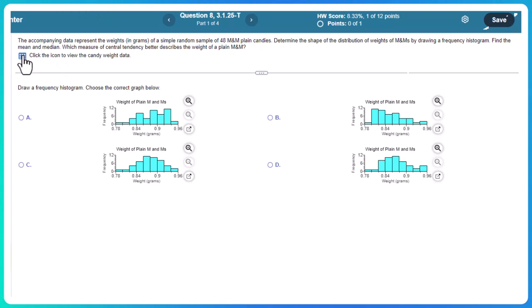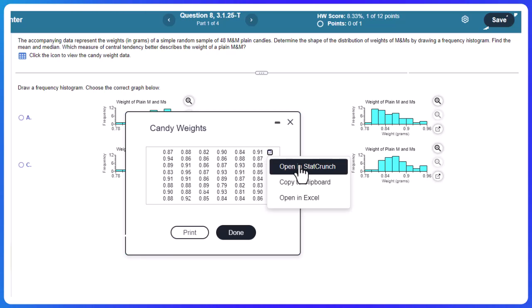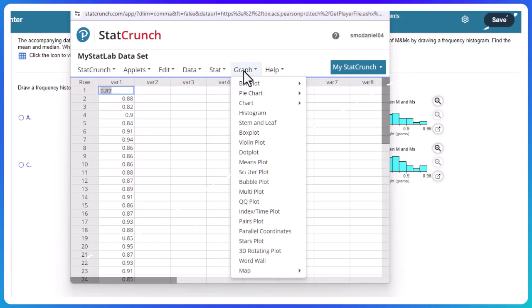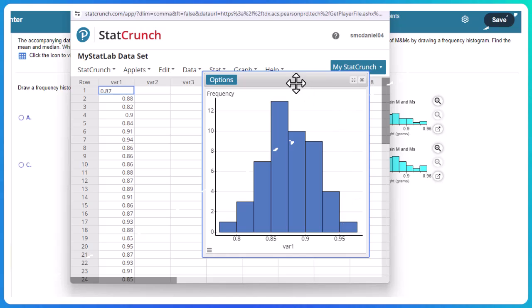We're going to go ahead and click on our table here, and I'm going to open that up in StatCrunch. We'll go ahead and create graph and histogram, var1, and just press Compute, take all the defaults.